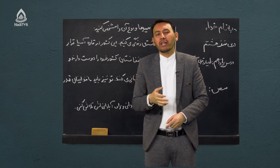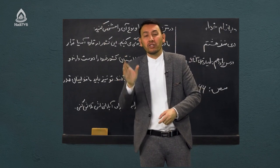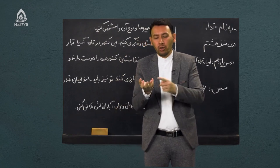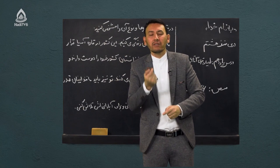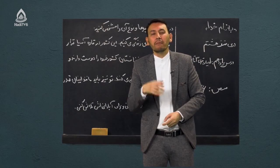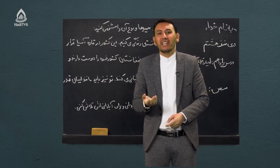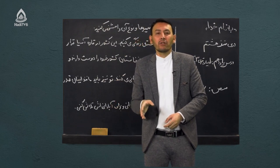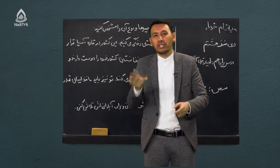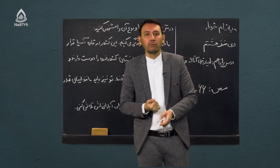ضمیرهای مشترک ضمیرهایی بودند که برای همه اشخاص، صرف نظر از اینکه مفرد باشد، جمع باشد، شخص اول، دوم یا سوم باشد، برای همه مشترک بیان می‌شود. سه ضمیر بود: خود، خویش و خویشتن — این سه ضمیر را ضمیر مشترک می‌گفتیم. ضمیرهای اشاره ضمیرهایی بودند که برای اشاره به یک اسم انسان یا غیرانسان به کار برده می‌شود، مانند این و آن برای مفرد، و اینها، آنها، اینان برای جمع.